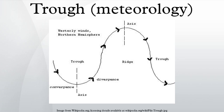The weather charts in some countries or regions mark troughs by a line. In the United States, a trough may be marked as a dashed line. In the UK, Hong Kong, and Fiji, it is represented by a bold line extended from a low pressure centre or between two low pressure centres. In Macau and Australia, it is a dotted line.